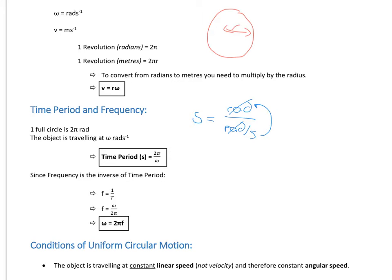To link in frequency: the time period and frequency are just inverses of each other, so frequency f = 1/T. Substituting in for the time period and rearranging, we get angular speed ω = 2πf. Frequency is something you'll see a lot more of when we get onto simple harmonic motion later on, because time period is very easy to measure, which we can then link into frequency. These are the key equations we need so far.